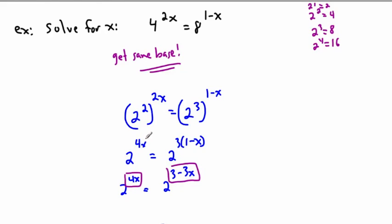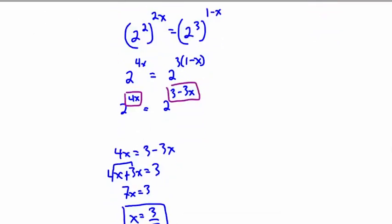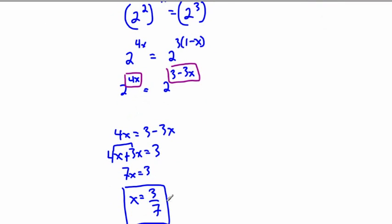This trick that if you have the same base, you have like a to the x equals a to the k, whatever these are, then this equals this. So we use that. Even though this looks really complicated, we wrote it as the same base. And once we got it 2 to the power of 4x equals 2 to the power of blah, we know that this equals this, or this equals this. And you can use that to solve for the missing variable. How cool is that?